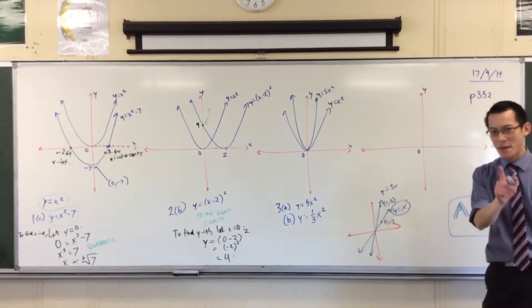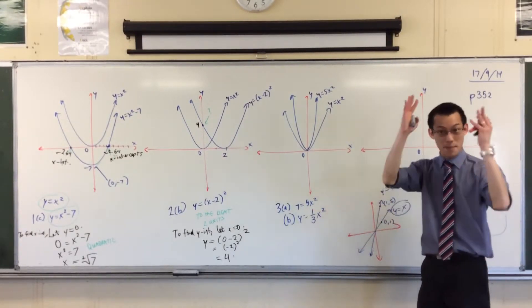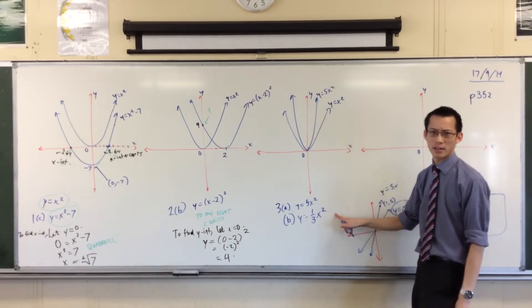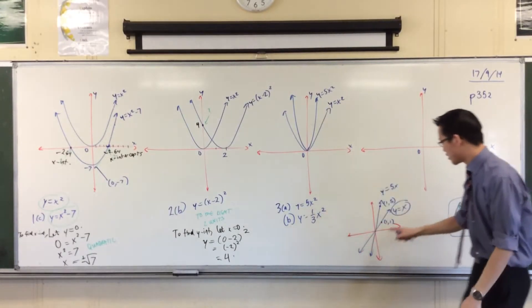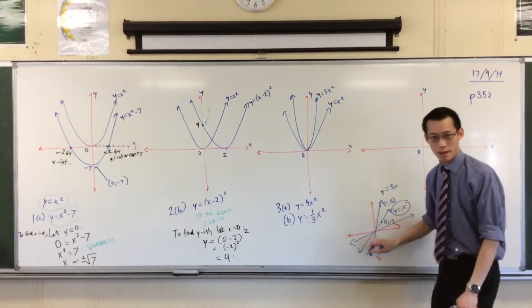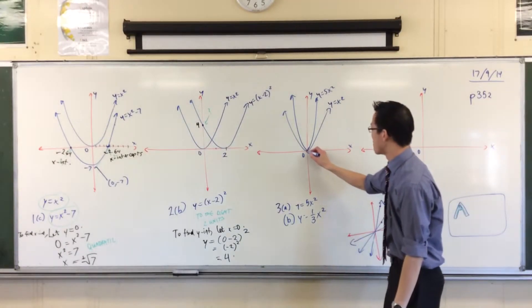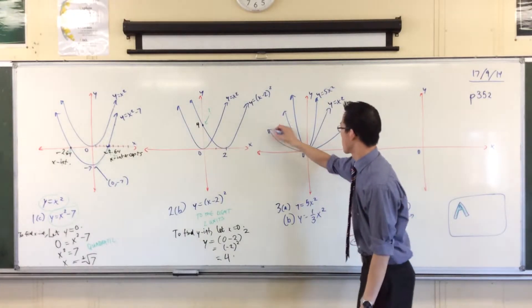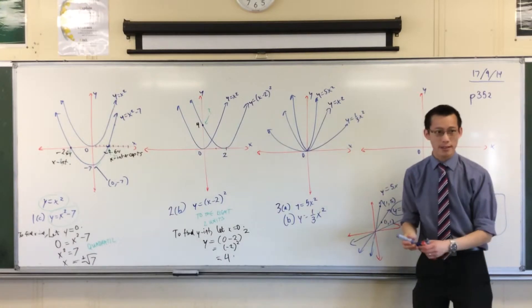Okay, now maybe you can see why I'm going to put this one on the same graph. 5x squared, it's steeper. A third x squared. It's going to be fatter, isn't it? Just like if I put a third x on here, it'll be shallower. So, yeah, it's gained a bit of weight. So, if I draw out like this, okay? That's what a third x squared will look like.